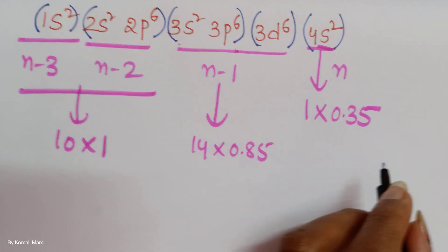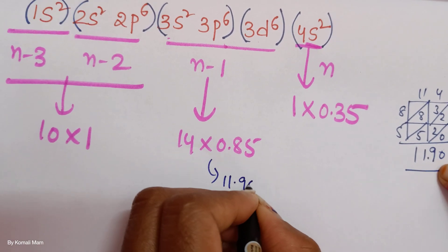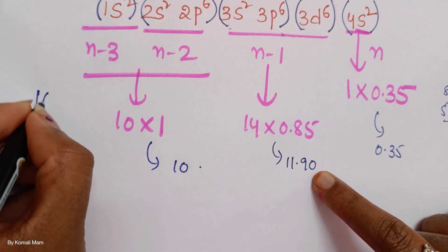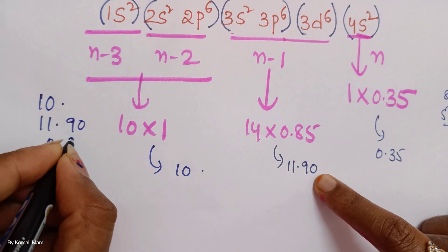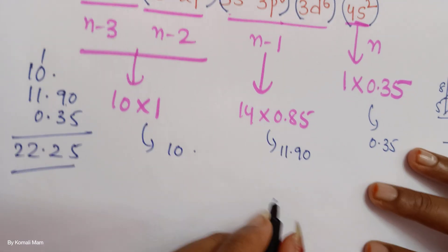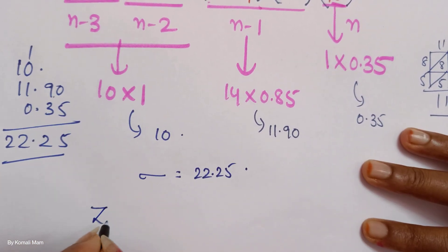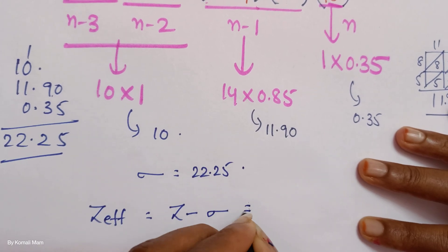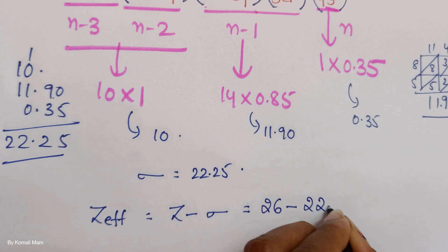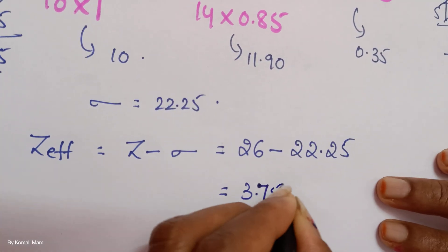Now count the total sigma: 0.35 + 11.90 + 10 = 22.25. Sigma value is 22.25. Then Z_eff = Z − sigma. The atomic number of iron is 26. So Z_eff = 26 − 22.25 = 3.75. That is the effective nuclear charge on the 4S electron.